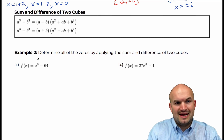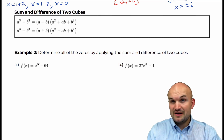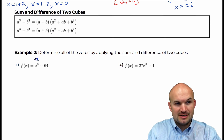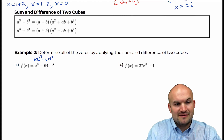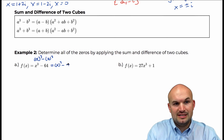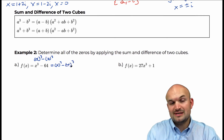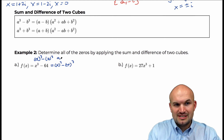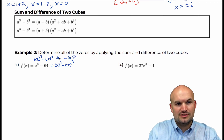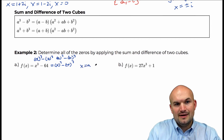The first thing is we want to identify a and b. To identify the difference of two cubes, you want to make sure the first term can be written as a cubed term — let's just use a cubed — and then minus b cubed. x cubed is obviously x cubed. Can we rewrite 64 as a cubed number? Indeed we can: 4 cubed, because 4 times 4 times 4 is 64. So in this case, a minus b — x is equal to a and 4 is equal to b.